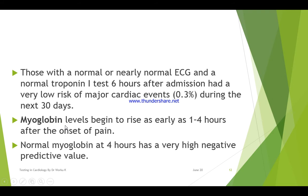Myoglobin is another cardiac marker, though not as widely available. It begins to rise as early as 1 to 4 hours after onset of pain, so it is earlier compared to CKMB and troponin. Normal myoglobin at 4 hours has a very high negative predictive value, meaning that if the patient comes with chest pain and myoglobin is normal within 4 hours, the likelihood of having myocardial infarction is almost zero.